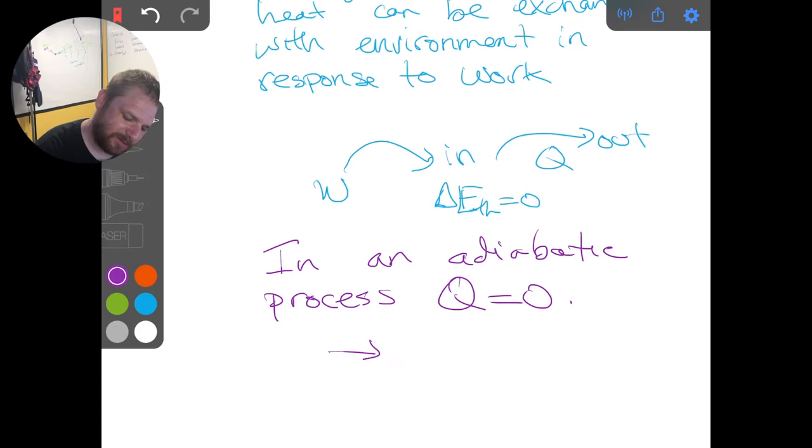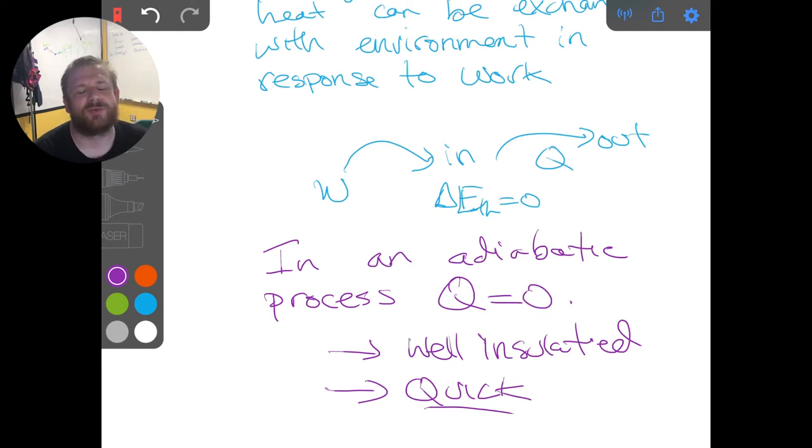And the distinguishing characteristics is it's well insulated, so we're blocking that exchange of energy due to a difference in temperature, and it happens quickly. This is one of the sort of keywords that we use to clue you in that we're talking about an adiabatic process is that if we say it evolves quickly.